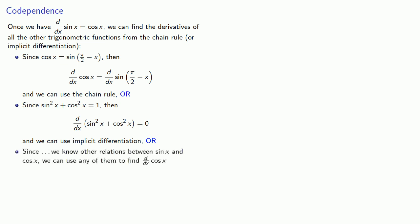Or maybe we want to be really creative. Since we know other relations between sine and cosine, we can use any of them to find the derivative of cosine x. And all we have to do is apply the chain rule, implicit differentiation, and some knowledge of the trigonometric functions and various identities. And in this way, we can find the derivative of cosine as well as the derivatives of the other trigonometric functions.